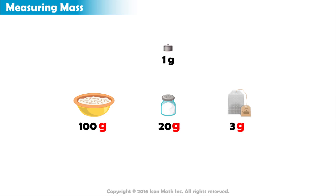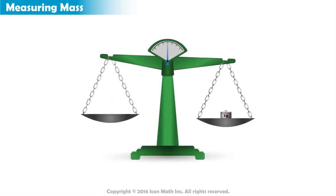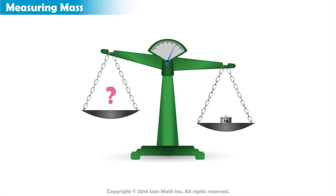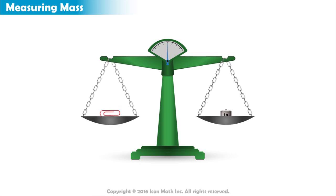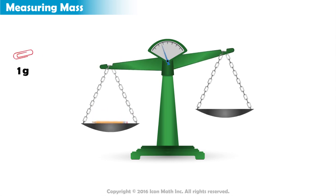How heavy is one gram? A gram is very light. For example, a paper clip could have a mass of one gram. We can measure different masses, like that of a pencil, which has a mass of about five grams.